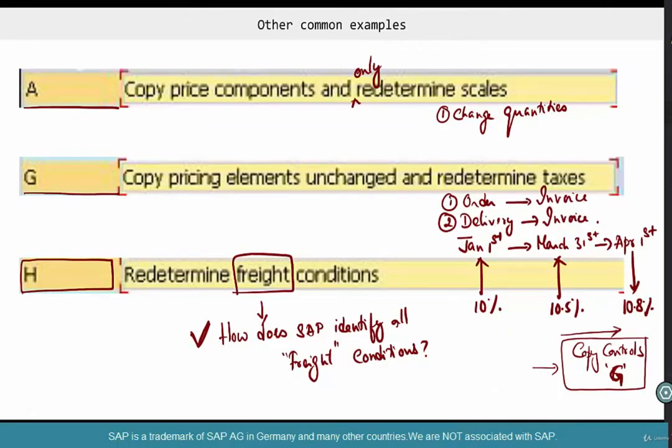So, that's the first thing. When you create one document with respect to other, like order with respect to quotation, invoice with respect to order or delivery. If you want to make sure that pricing has to be done in a certain way, then you can configure a pricing type in copy controls. The second thing is, how does SAP identify these classes or groups of condition types and then redoes pricing only for a select class or group of condition types?